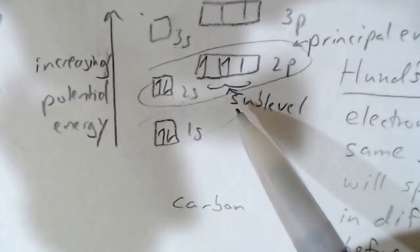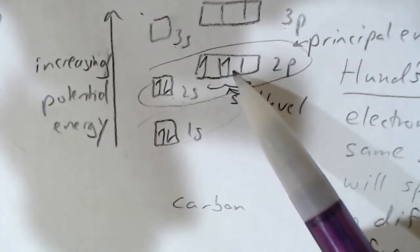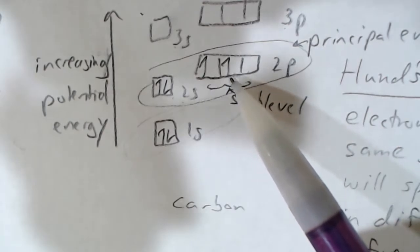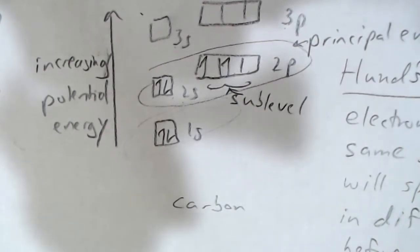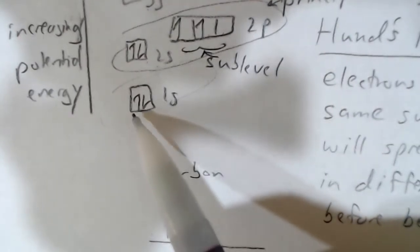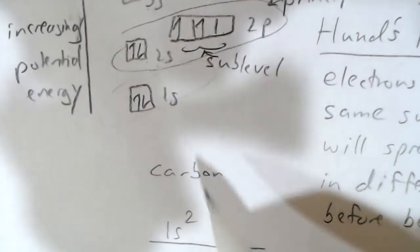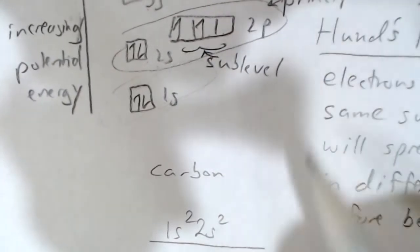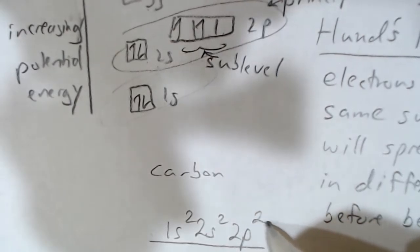It's kind of like if you go onto a city bus, you're going to sit in a different seat than a stranger. You're not going to pair up when there's equally good seats nearby. The electron configuration of carbon would be 1s2, because there's two electrons in 1s, and 2s2, there's two electrons in 2s, and then there's two electrons in 2p, so 2p2.